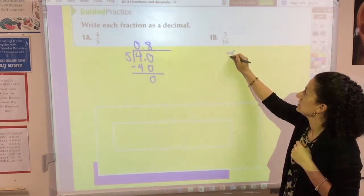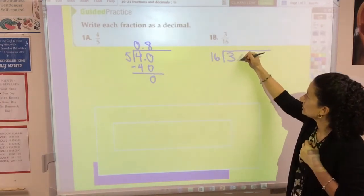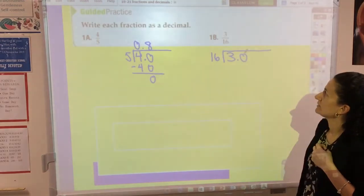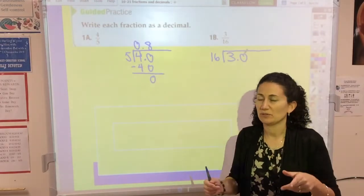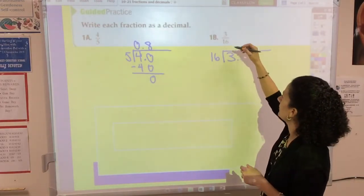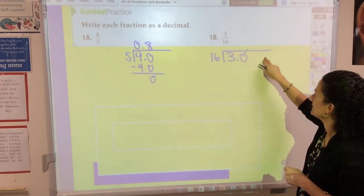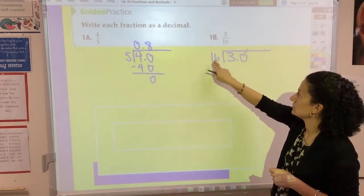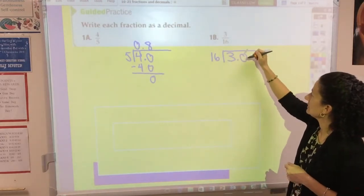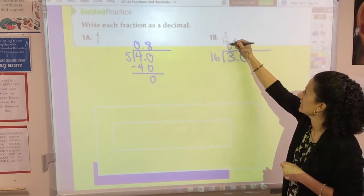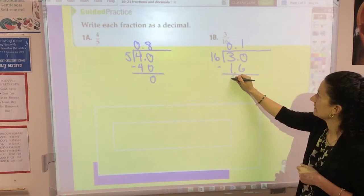This one's a little bit different, a little bit harder. So 3 divided by 16. One of the most common mistakes when turning a fraction to a decimal is kids divide the wrong numbers. Remember the numerator becomes your dividend, the denominator becomes your divisor. Alright, so 16 goes into 30 just one time. When I subtract, I get 14. I bring down a 0.